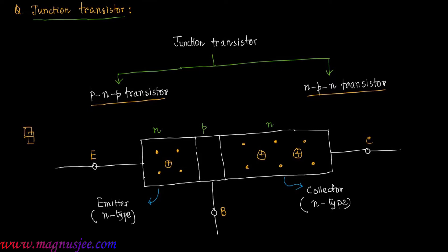The middle portion is known as the base — the thin layer of P-type semiconductor. The majority charge carriers in the P-type base are holes, and conduction electrons are the minority charge carriers. The base is made of P-type semiconductor.